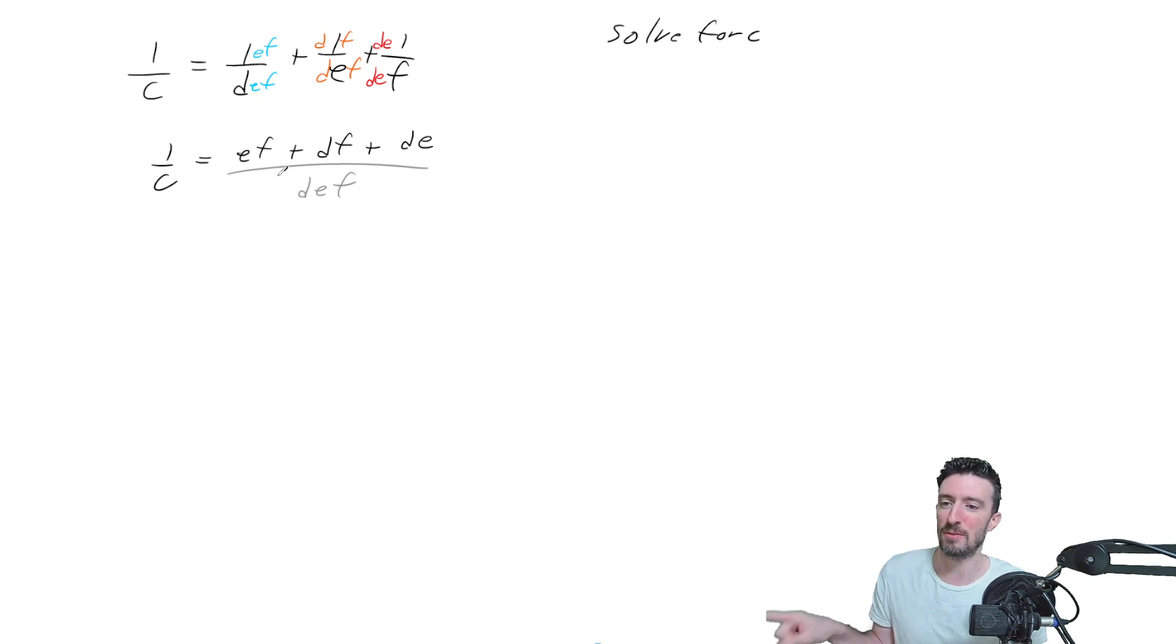Now that we have a fraction, not a sum of fractions, we can take the reciprocal of that fraction as long as we take the reciprocal on this side, which would leave us with C over 1 equals DEF over the numerator.